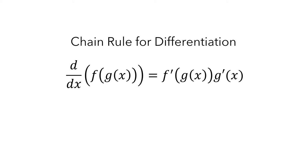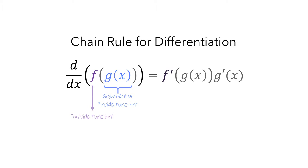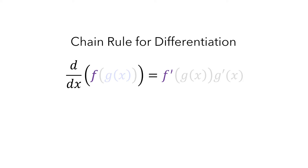Let's take a look at a couple of important features of the chain rule. f is the name of what is often called the outside function, and g is called the argument of the function f. When differentiating a composite function, you need to take the derivative of the outside function while keeping the argument, g in this case, the same. You then multiply f' by the derivative of g with x as its argument.